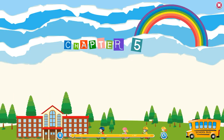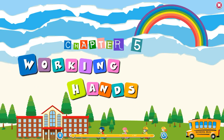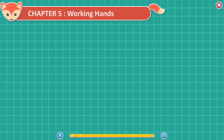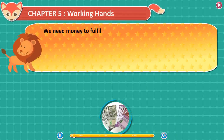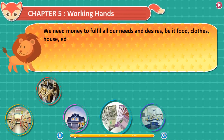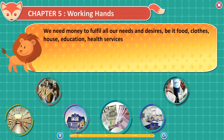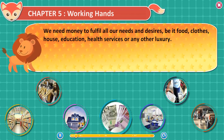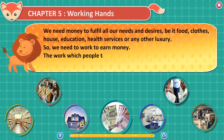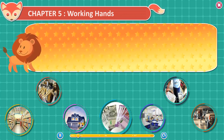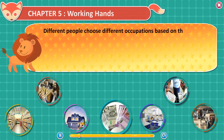Chapter 5: Working Hands. We need money to fulfill all our needs and desires — be it food, clothes, house, education, health services, or any other luxury. So, we need to work to earn money. The work which people take up to earn money is called their profession or occupation. Different people choose different occupations based on their needs and the kind of work they are able to do.